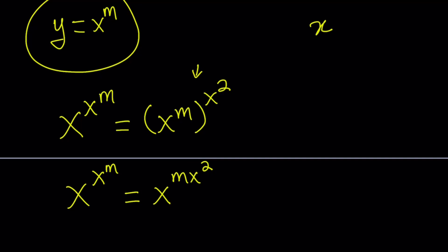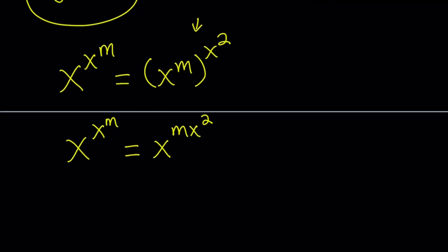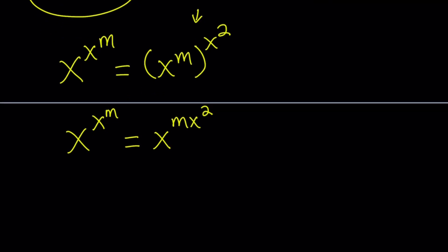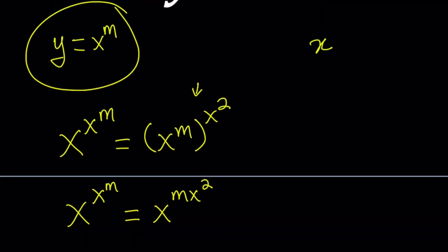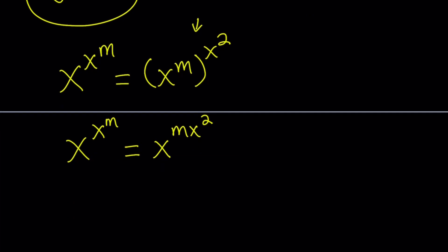Now we have the trivial cases — for example, can x be 1? Can x be negative 1? We're going to look at those cases later on. Let's go ahead and solve it without those trivial cases. Suppose x does not equal 1 or negative 1. In this case, we want to compare the exponents, so this means x to the power m equals m times x squared.